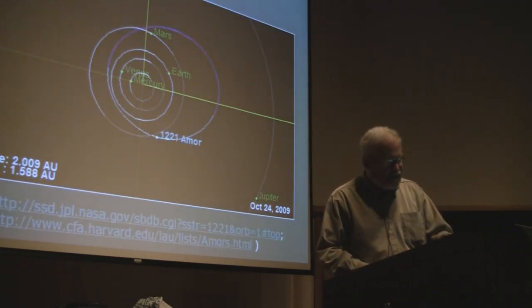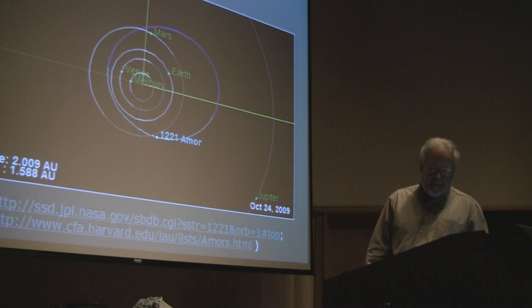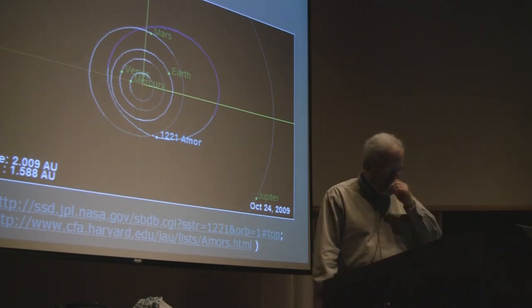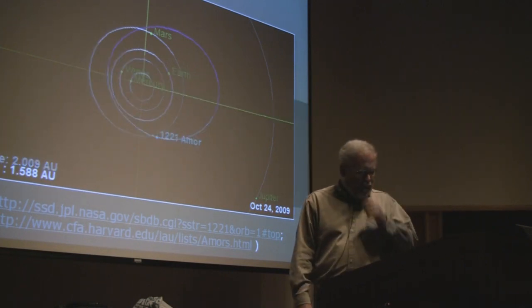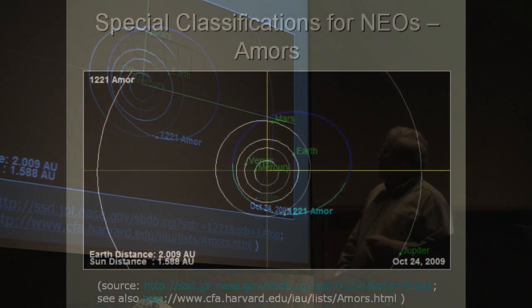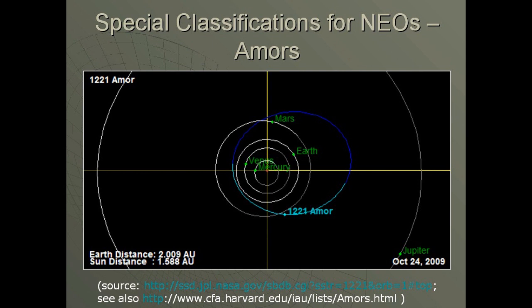There are special classifications for what we call near-Earth objects. And the first one is called AMORs for asteroid 1221 AMOR discovered in 1932. They cross the orbit of Mars and they can approach the Earth just like this one does.